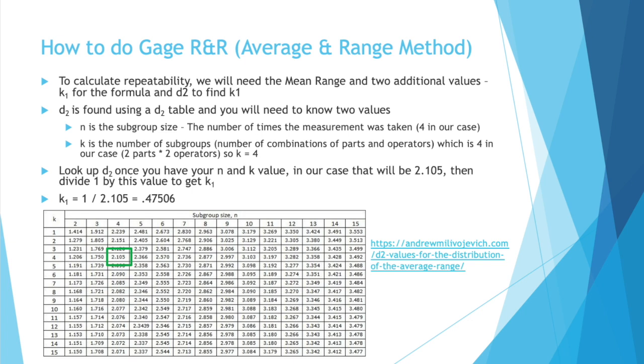That is our d2 value. And then using that d2 value, we calculate k1 by taking one and dividing it by that 2.105, which gets us .47506.